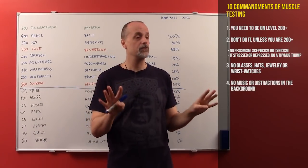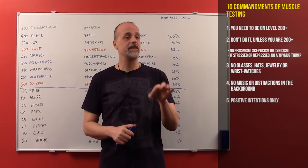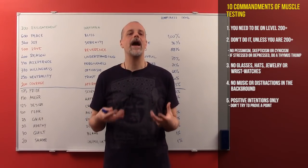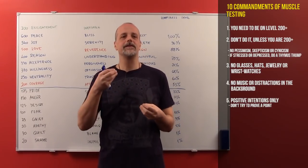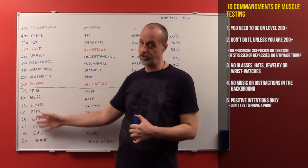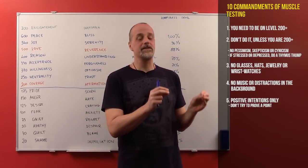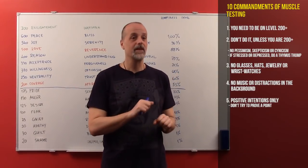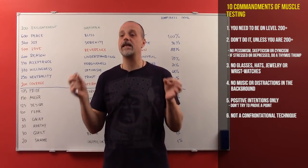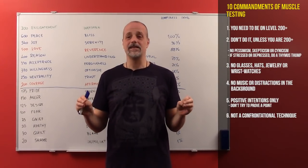Rule number four: no music and no distractions in the background — that will also influence the result. Rule number five: positive intentions only. Trying to prove a point negates accuracy. Why do you feel the need to prove your point? Does being right come from insecurity or from confidence? So, positive intentions only. Rule number six: this is not a confrontational technique. Respect other people's willingness to participate and do not try to prove a point. It is extremely important.